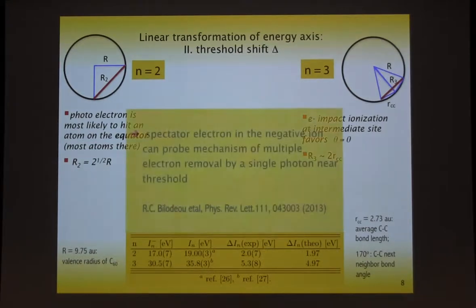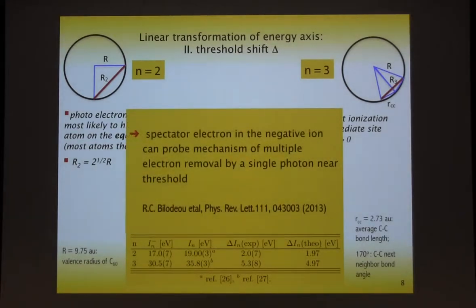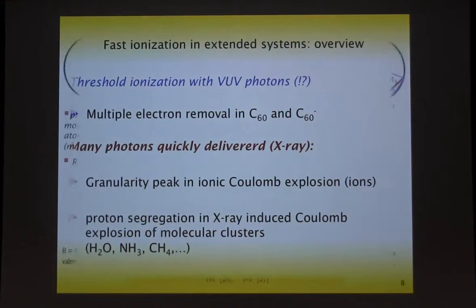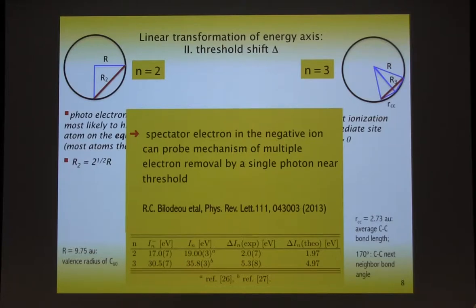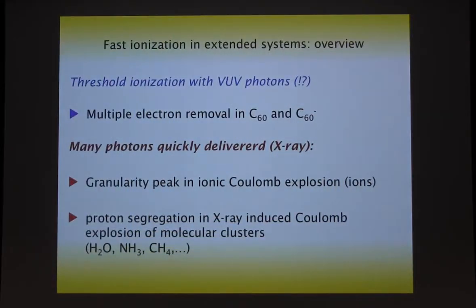If you don't believe it, please measure it — it would be fantastic. The take-home message is that spectator electrons in a negative ion can probe the mechanisms of multiple electron removal by a single photon near threshold. This is a general notion we discovered by chance: this loosely bound negative electron is a very sensitive probe for the dynamics.